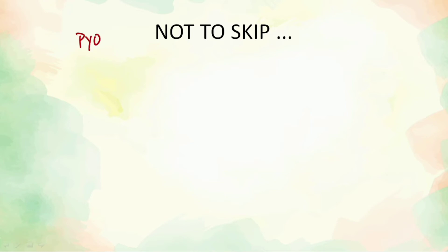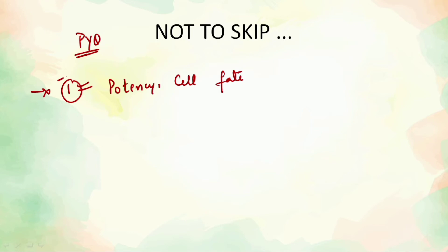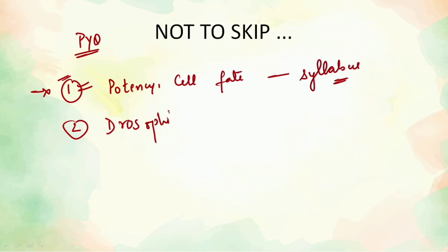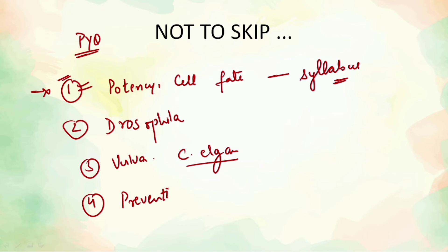Looking at previous year question papers, the most repeatedly asked topics from this unit are: first, basic concepts including potency and cell fate — forming the basis of understanding this unit; second, Drosophila — very important, cannot be skipped; third, vulva development in C. elegans — again, do not skip; and fourth, prevention of polyspermy — very important and a small topic, coverable in one to two hours.